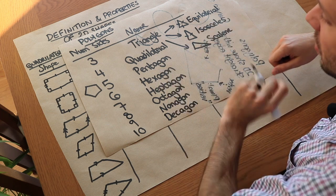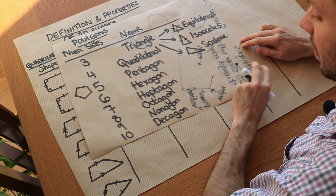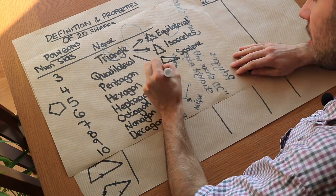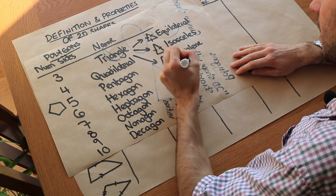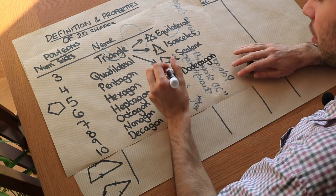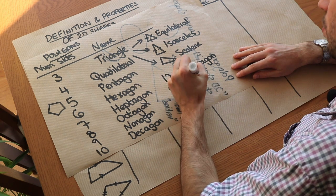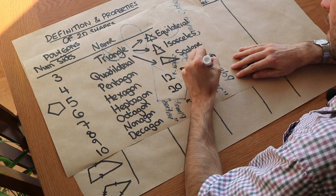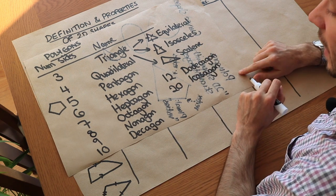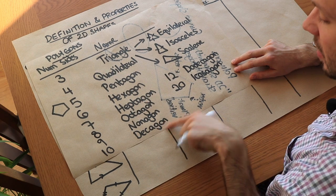Dec means ten — for example, in the decimal system, each digit can have ten possible values. Eleven-sided polygons don't have a commonly used name, but a twelve-sided polygon is a dodecagon. The only other common name is a twenty-sided polygon, which is called an icosagon, with icosa meaning twenty. It's helpful to know all the names up to ten-sided polygons.